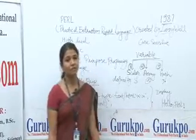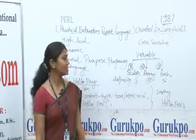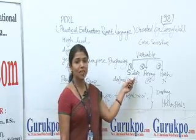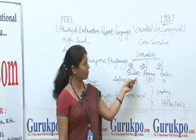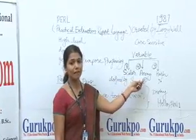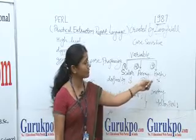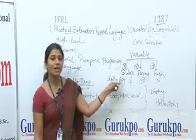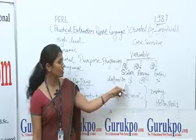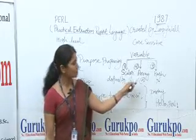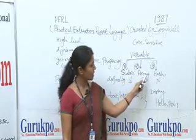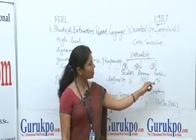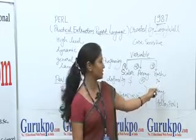So friends, it is a case sensitive language. It uses three types of variables: the first is scalar variable, the second is array variable, and the third is hash variable. We denote scalar variable using the dollar sign, array variable using the at-the-rate sign, and hash variable using the percentage sign.